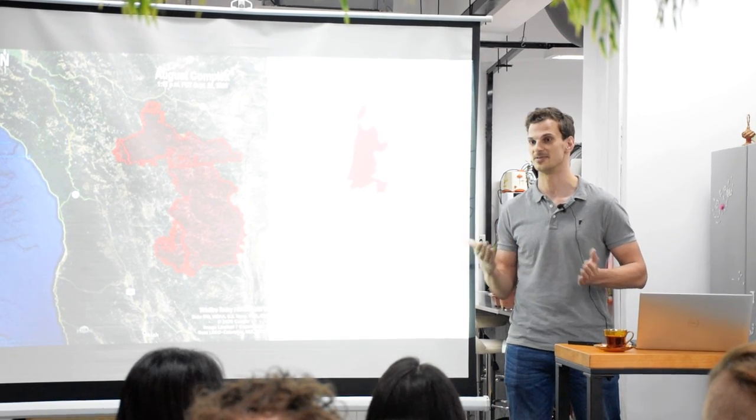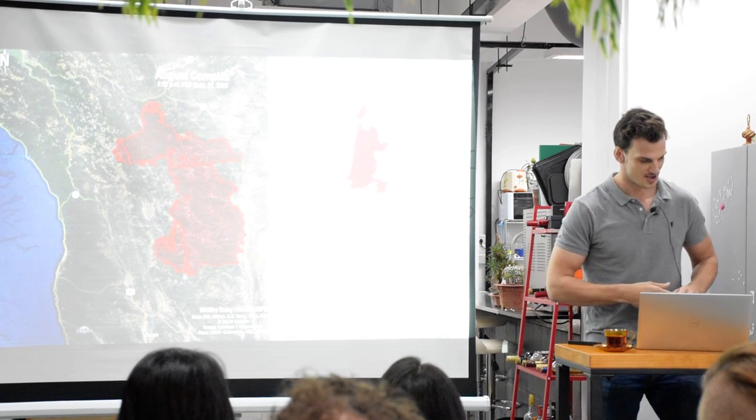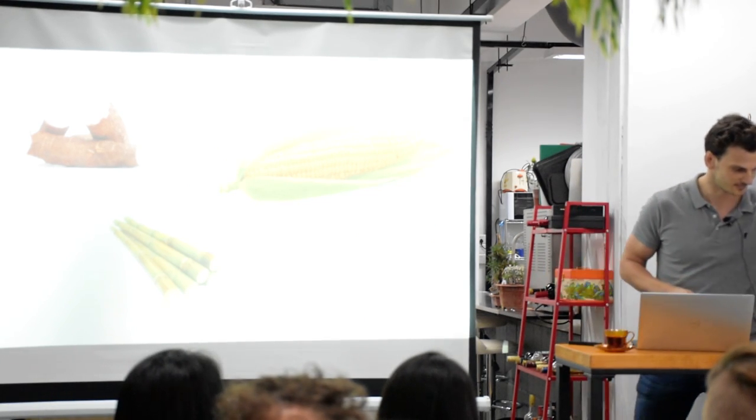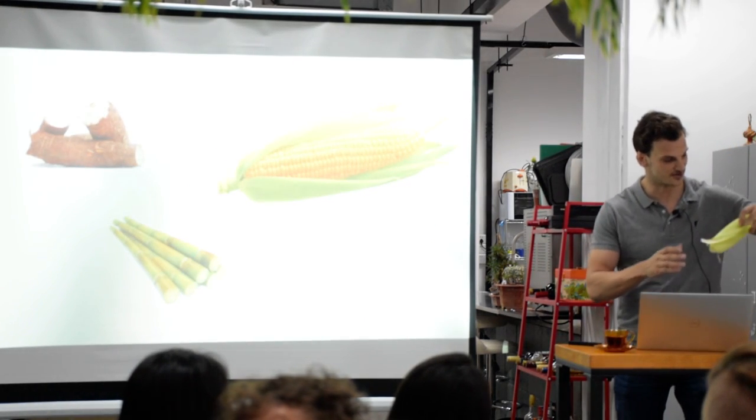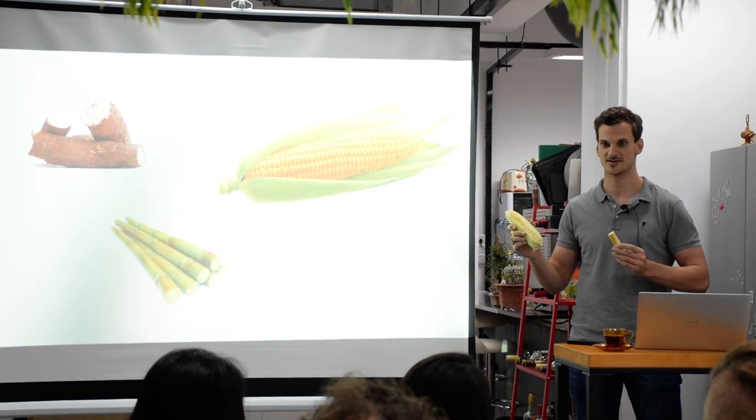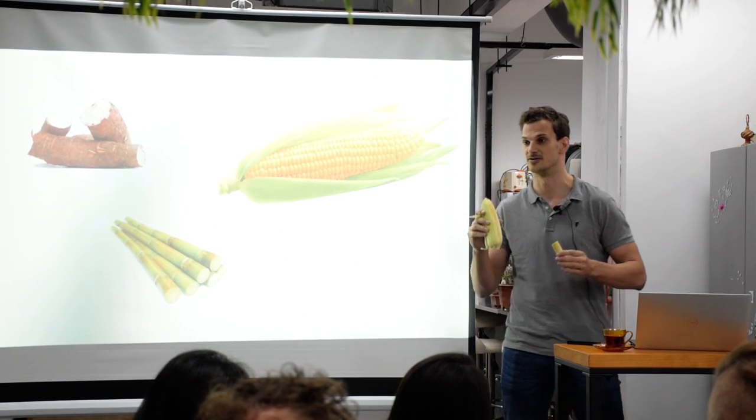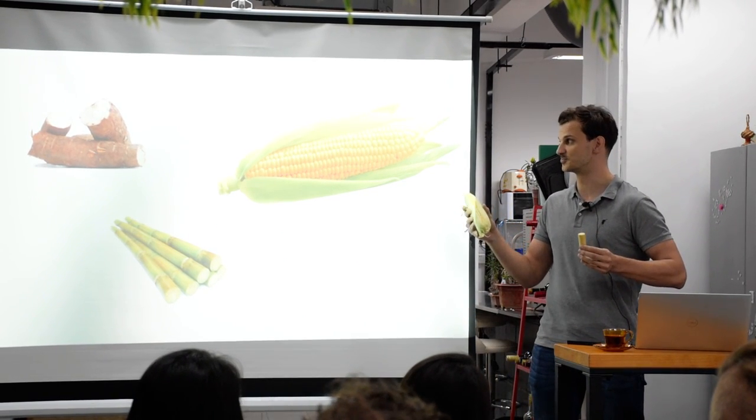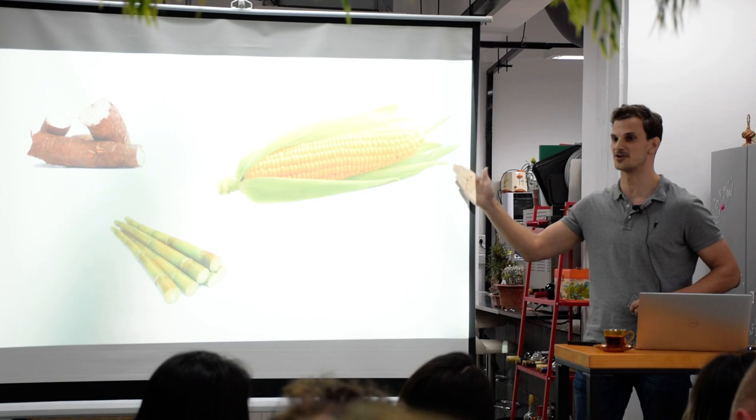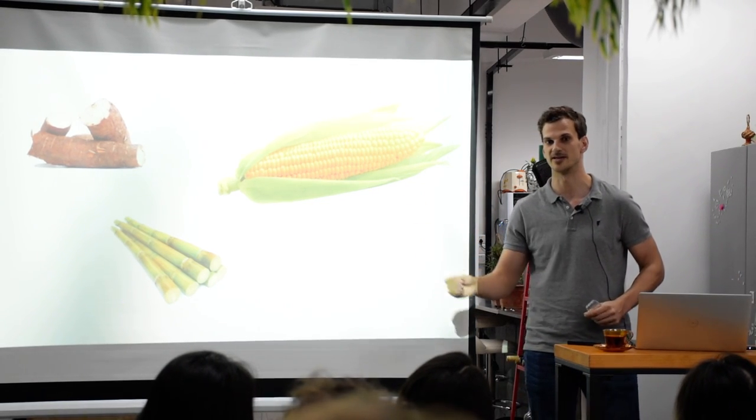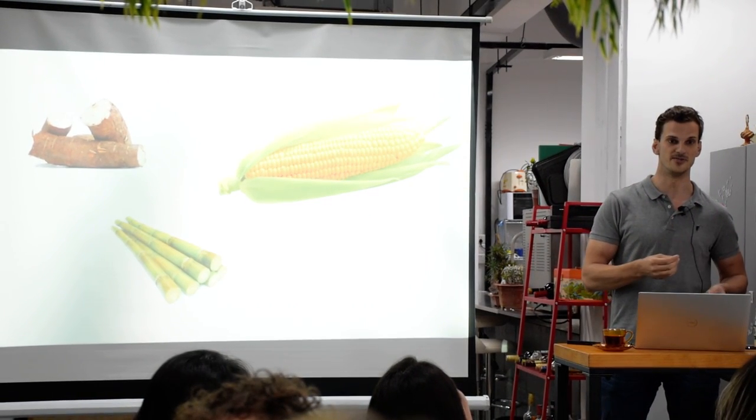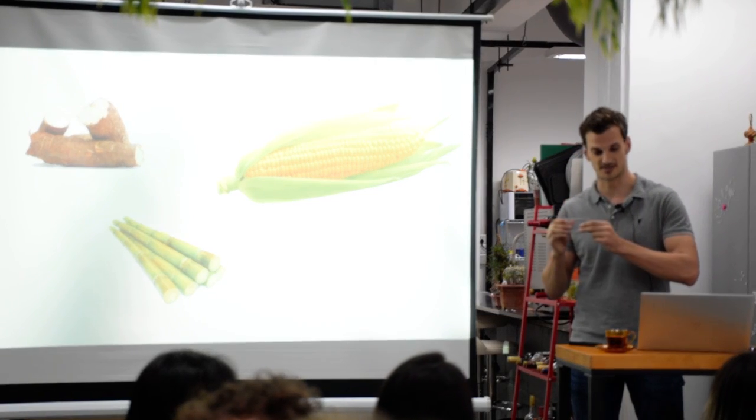Instead of using oil, we can use renewable resources. I brought them here—this is corn and sugarcane. These two products have in common that they contain a lot of starch. These starch-rich crops can be turned through an industrial process of fermentation and later polymerization into PLA.